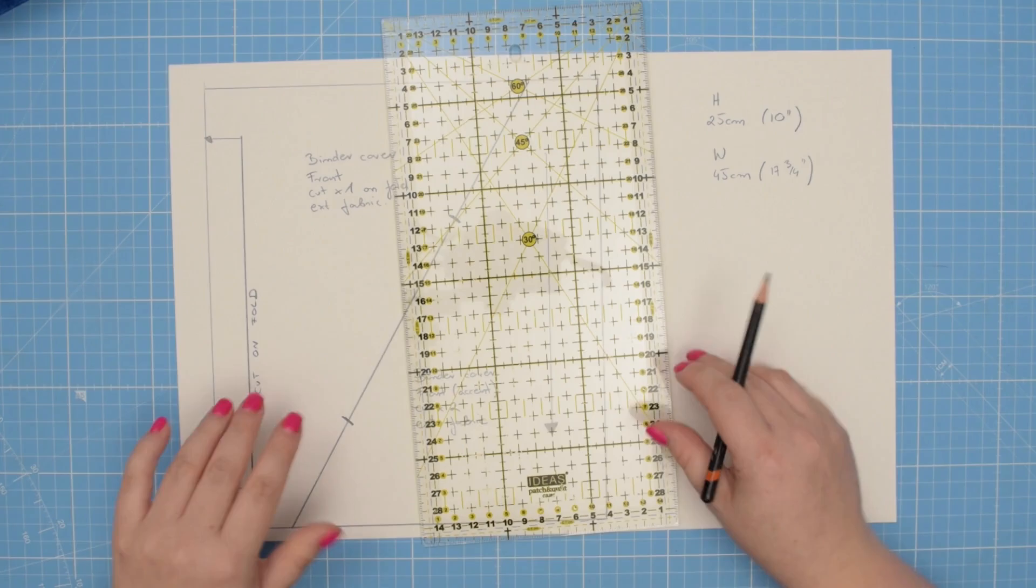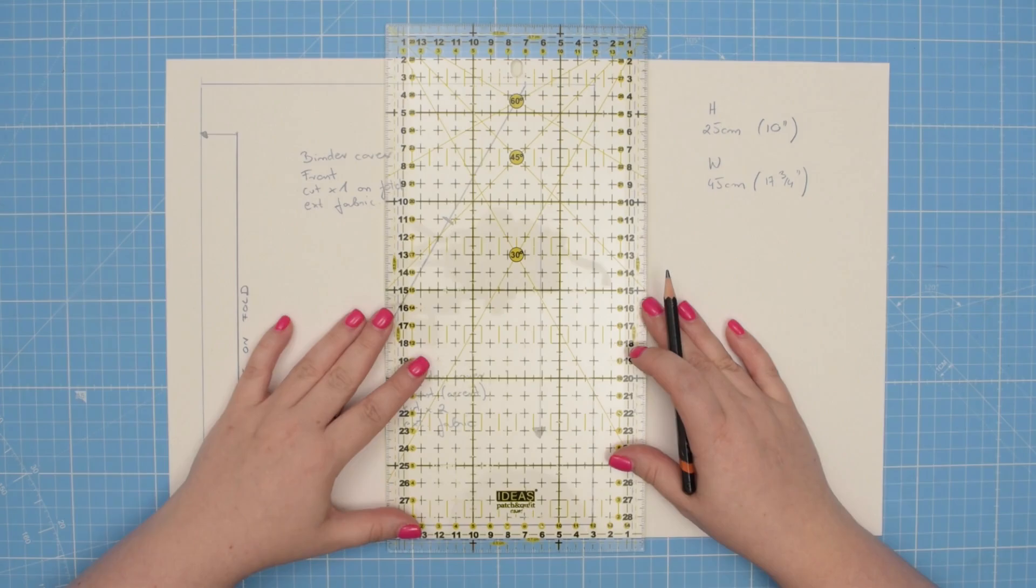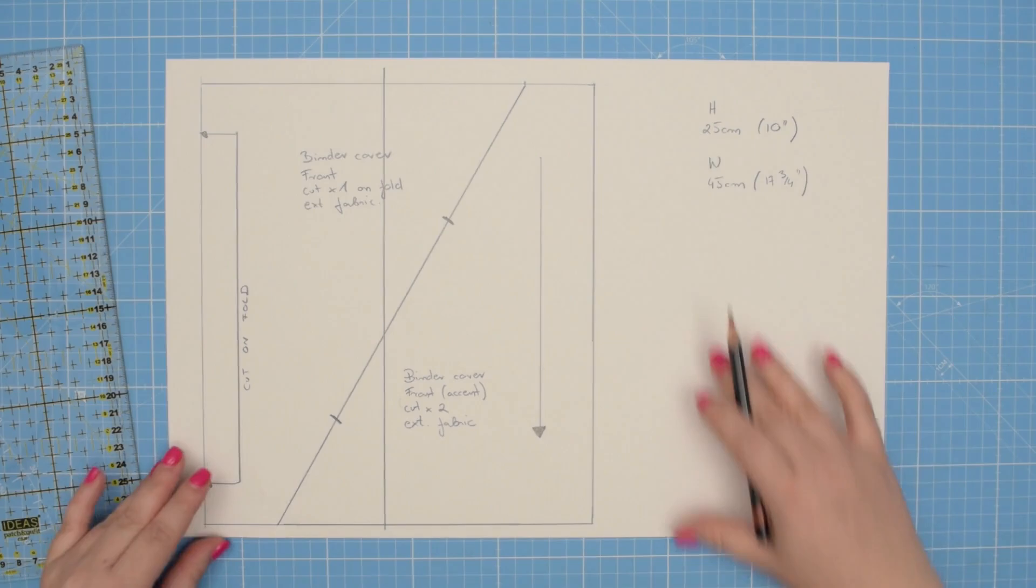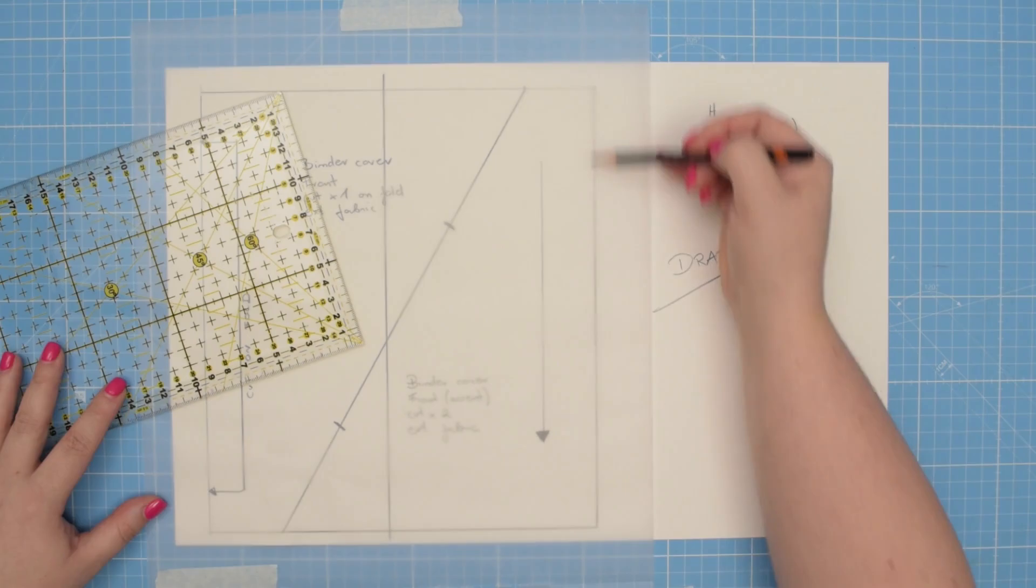Let's measure it on our pattern piece. This is the edge of my binder cover. I'm going to measure 12 centimeters from that edge and I can simply draw a line just like that. This will be the sleeve. This is the draft of our binder cover. Now we can take the tracing paper and create individual pattern pieces.